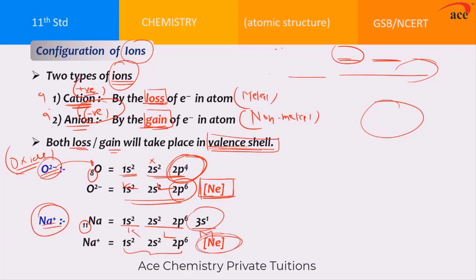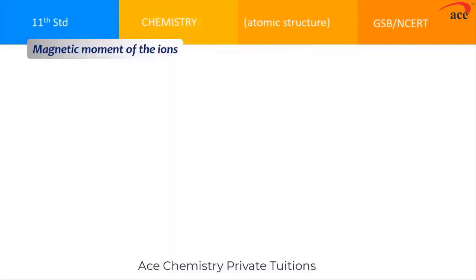Na⁺ again achieves the configuration of the nearest noble gas, becoming more stable. So cations are formed by loss of electrons — generally metals form cations — and anions are formed by gain of electrons — generally non-metals form anions. Now let us discuss how to decide the magnetic moment of any ion, whether it is a cation or anion, on the basis of the presence of unpaired electrons.